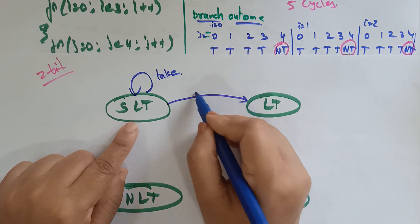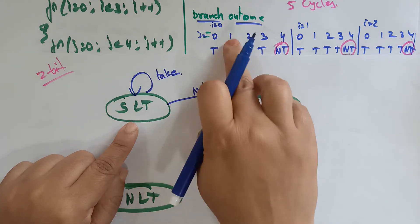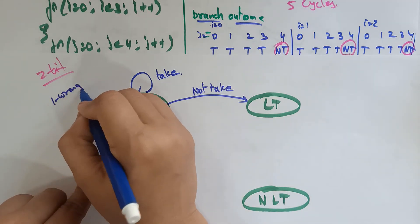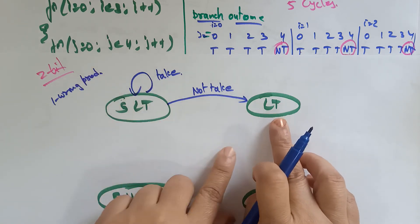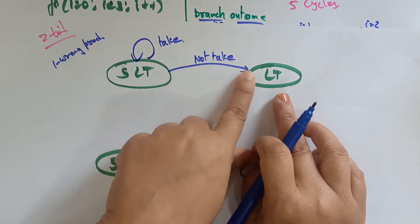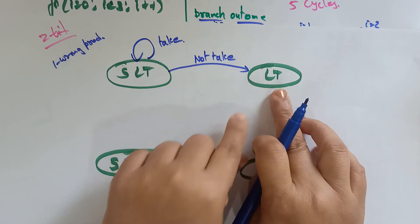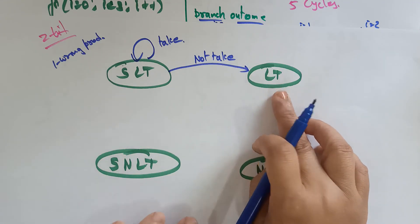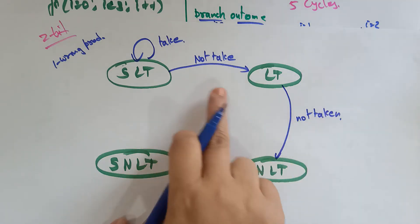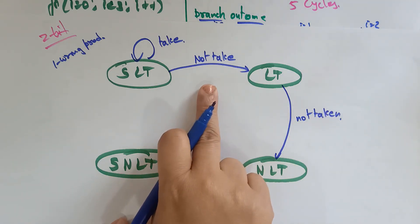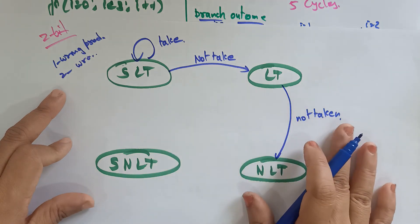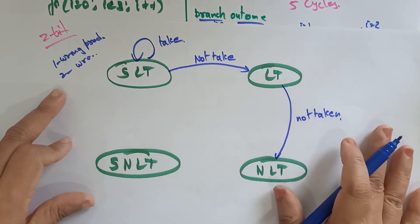From LT, the outcome is still not taken — two wrong predictions now. With two wrong predictions I change my mind: LT transitions to NLT (non-likely to be taken). I decided I don't want to take the branch. From NLT I proceed with not taken. If again the outcome says not taken, I become SNLT (strong not likely to be taken) — completely decided not to take.